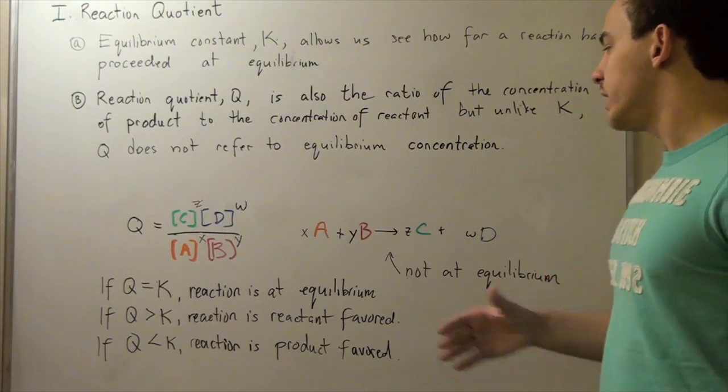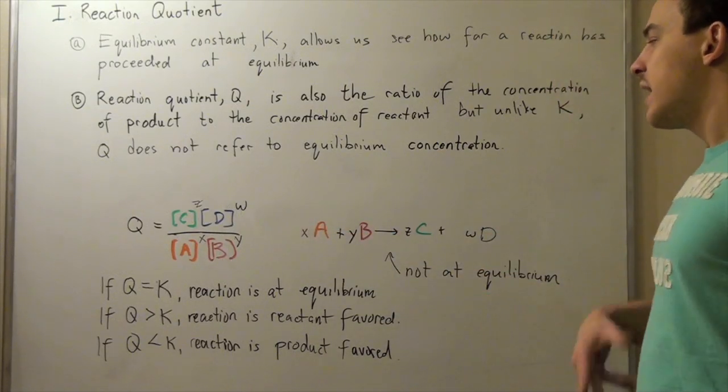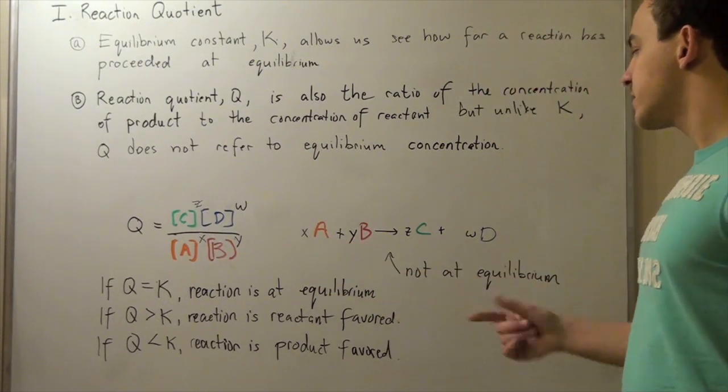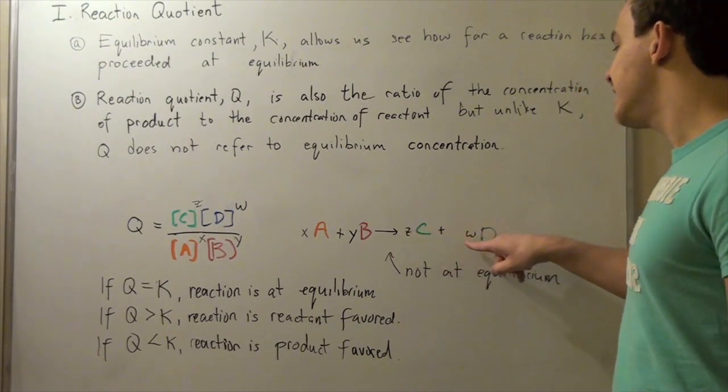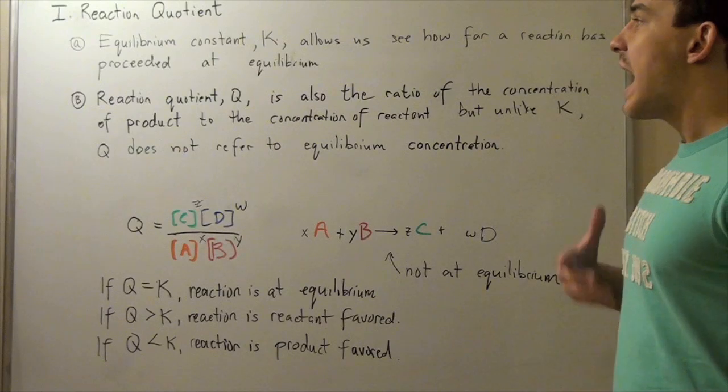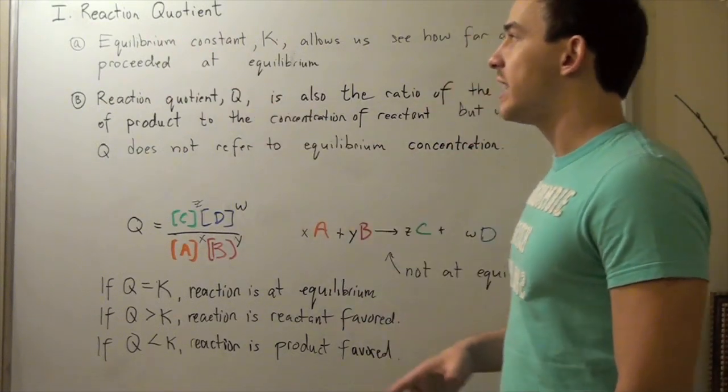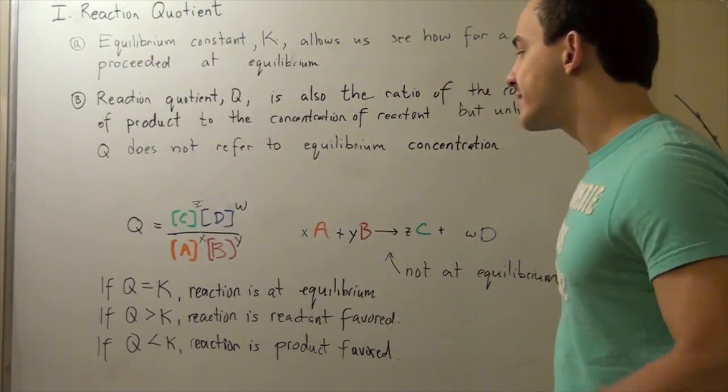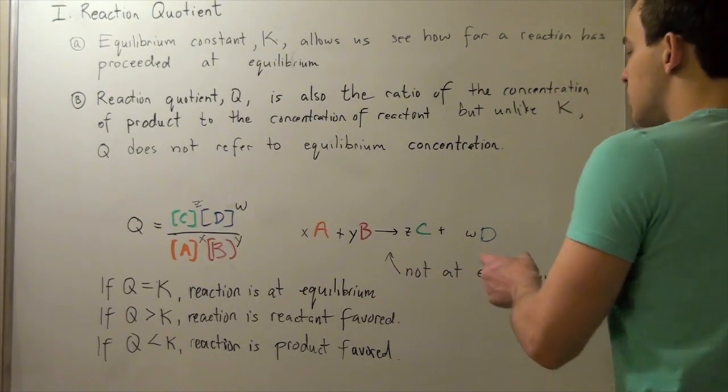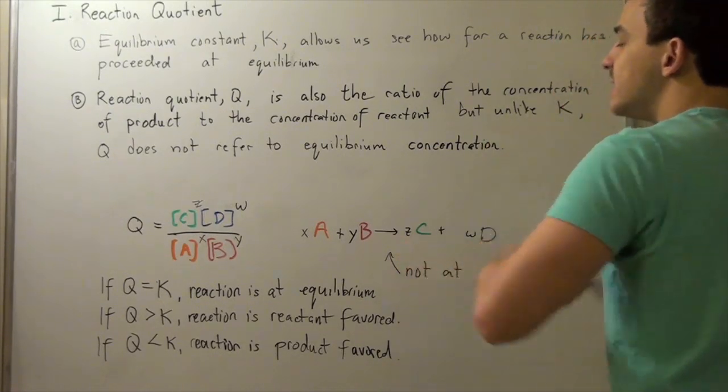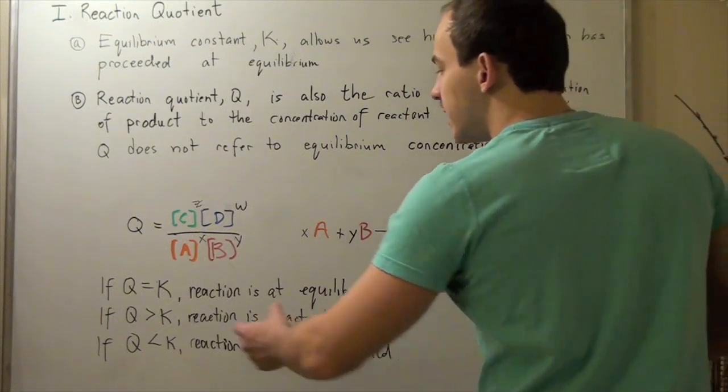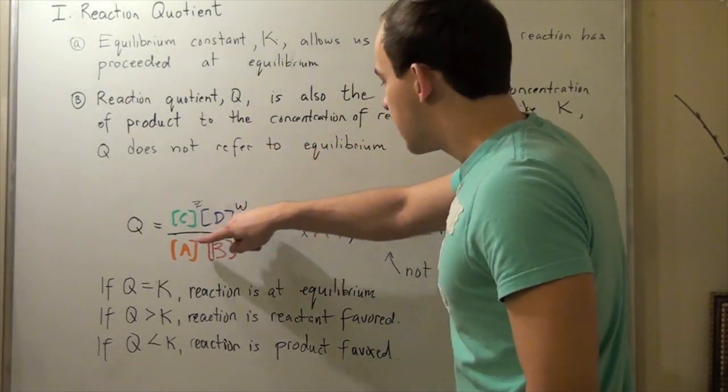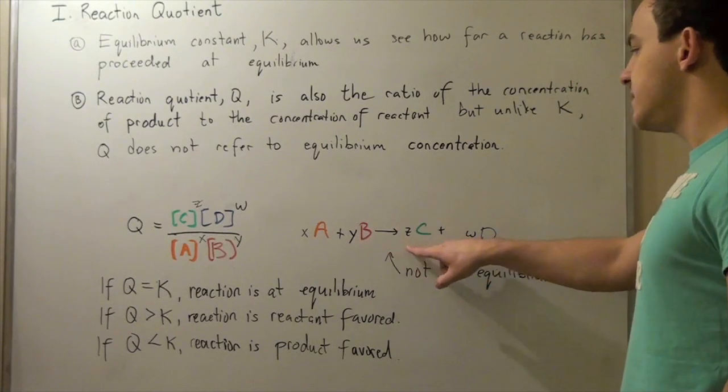Now if we look at the following reaction that is not at equilibrium, in which X moles of A react with Y moles of B to form our products C and D, both having Z and W moles respectively. Now, our reaction quotient is the same thing as our equilibrium constant in the sense that it's a ratio. It's the concentration of C times the concentration of D divided by the concentration of A times the concentration of B. Now, these exponents come from the coefficients X, Y, Z, and W.